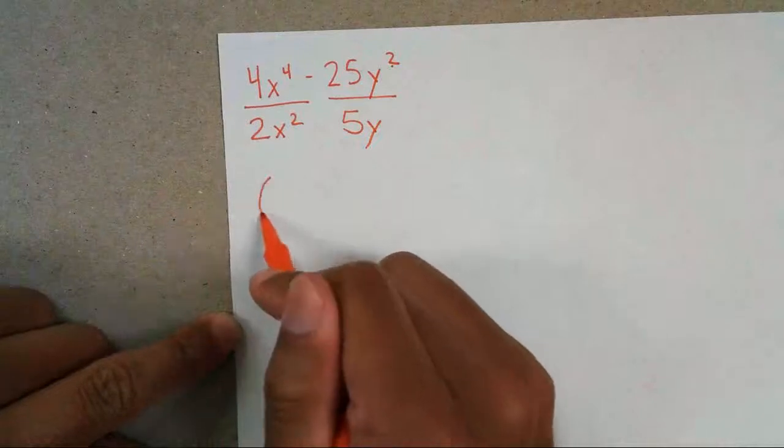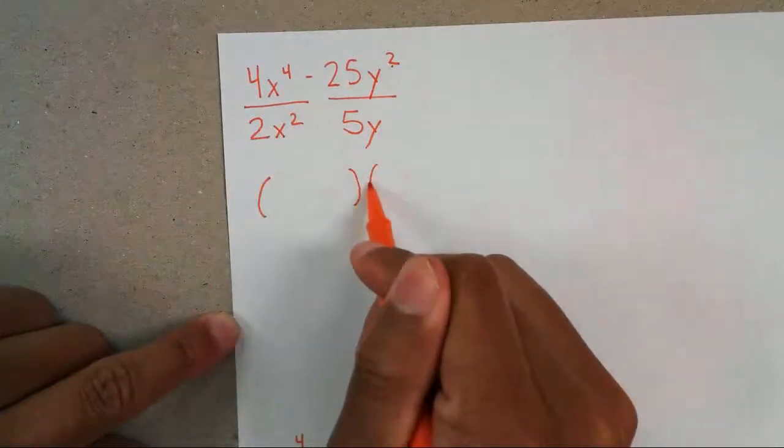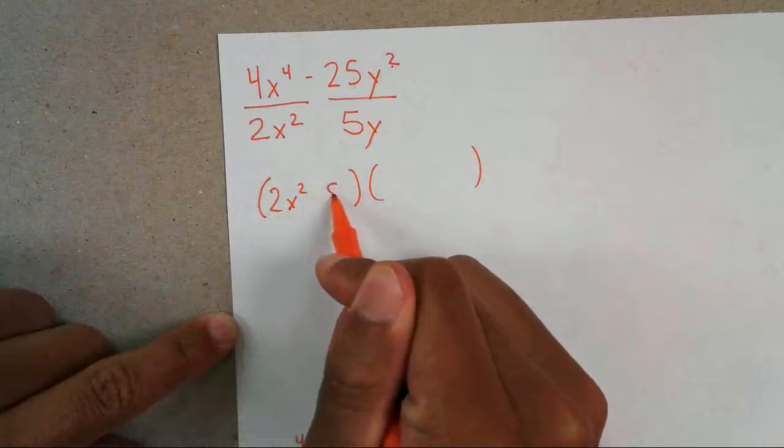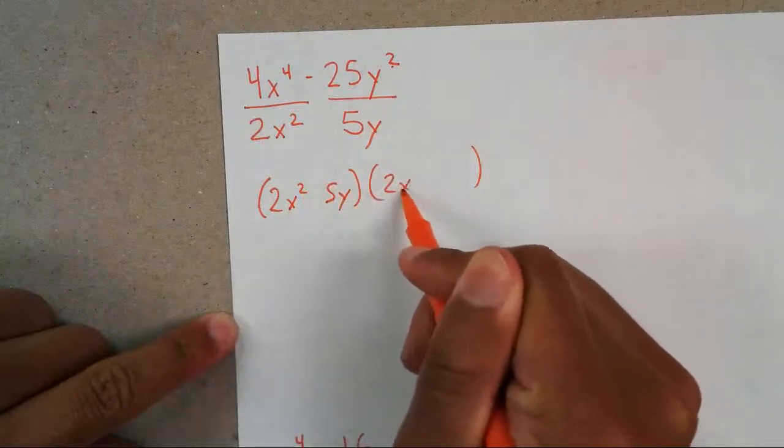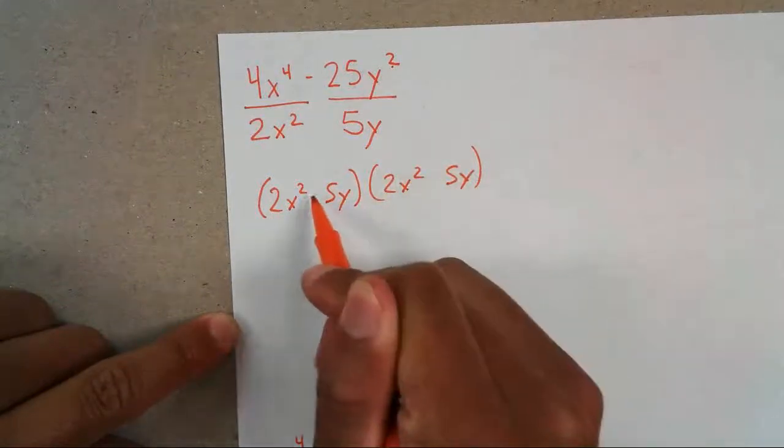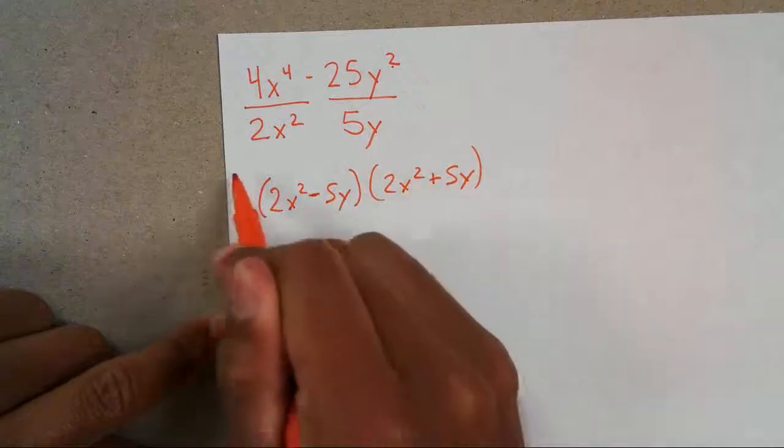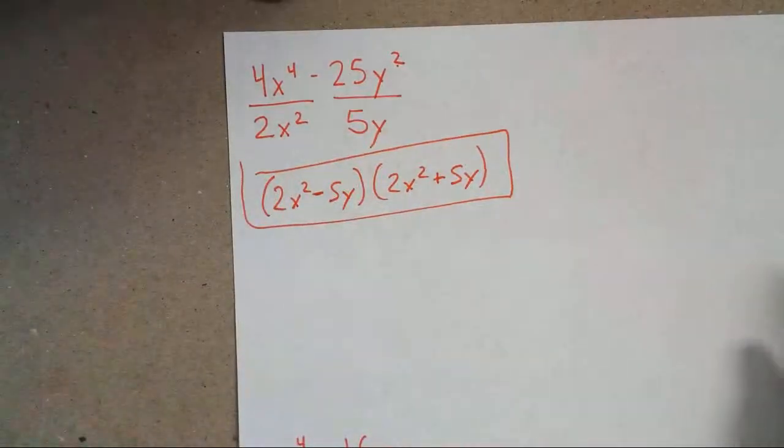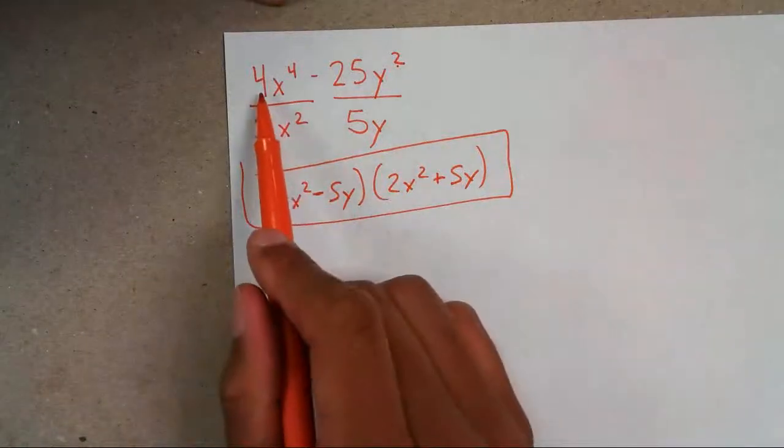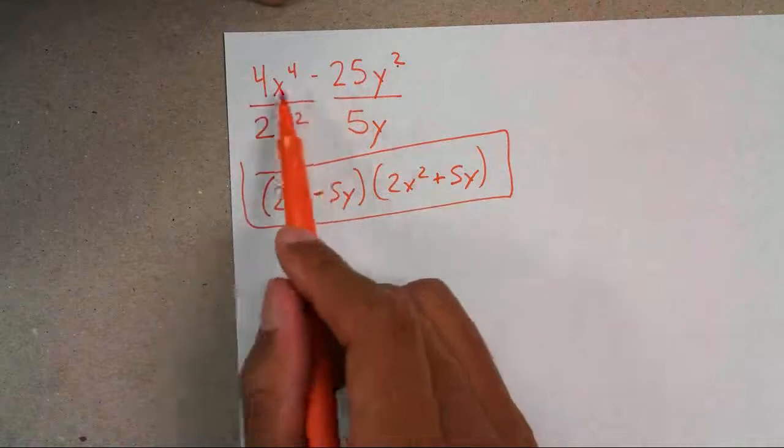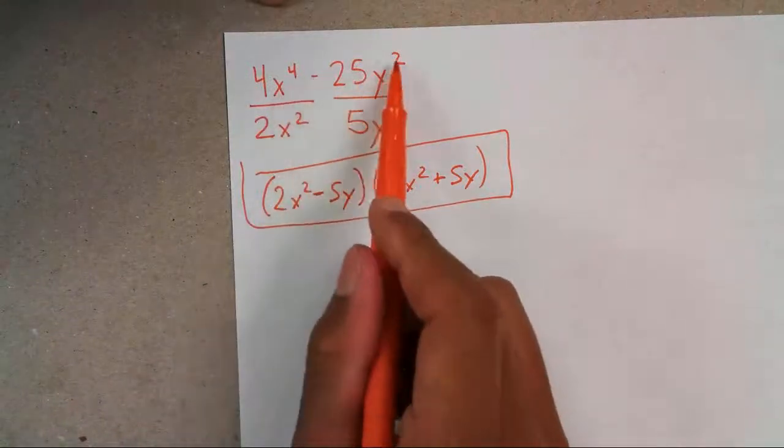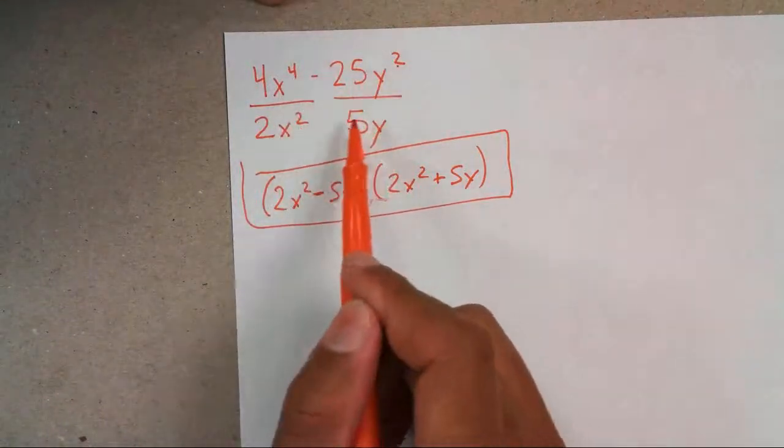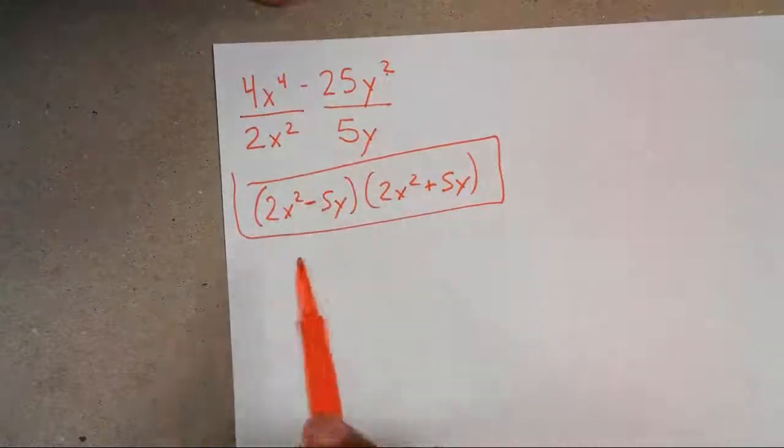So that means your answer is going to be 2x squared, 5y. 2x squared, 5y. Minus, plus sign, and that's your final answer. So even if they give you a complicated example or question, just make sure that you have two terms. The numbers are perfect squares. Your exponents can be divided by 2 and put your bases underneath and then put them in your parentheses and you'll be done.